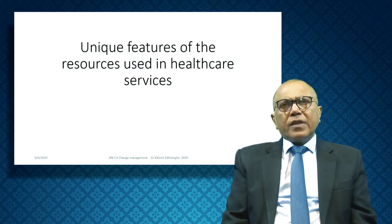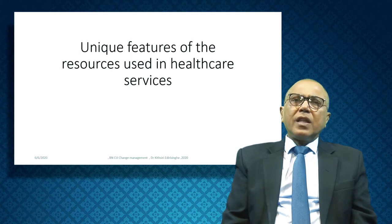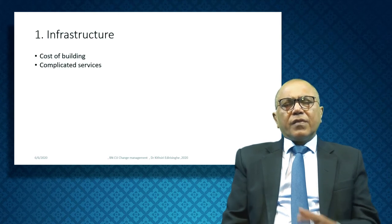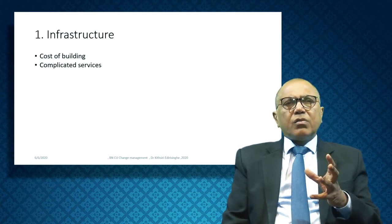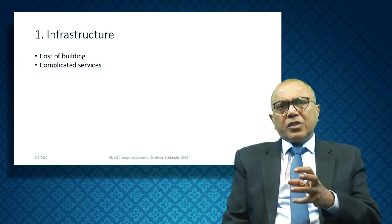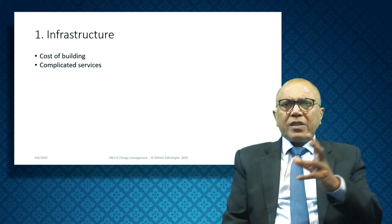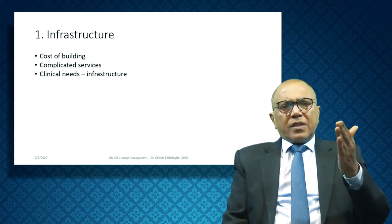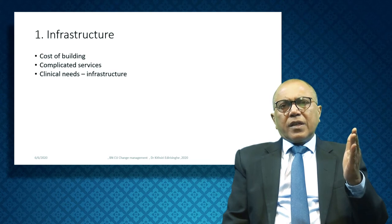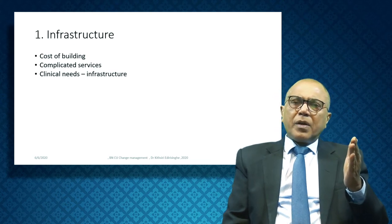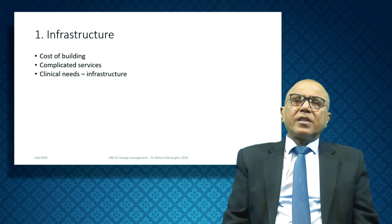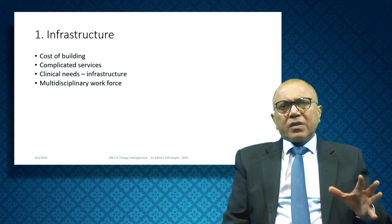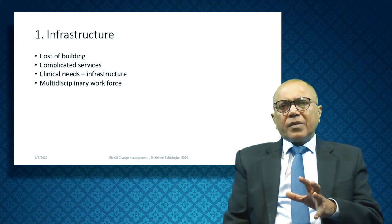What are the unique features of the resources used in healthcare? One thing is infrastructure — it is a very expensive cost of the building. The services are very complicated: you have theatres, ICUs, oxygen, etc. Then the clinical needs of the infrastructure include proper walls, non-antimicrobial stuff, infection control techniques, air conditioning, and multidisciplinary staff working in this.